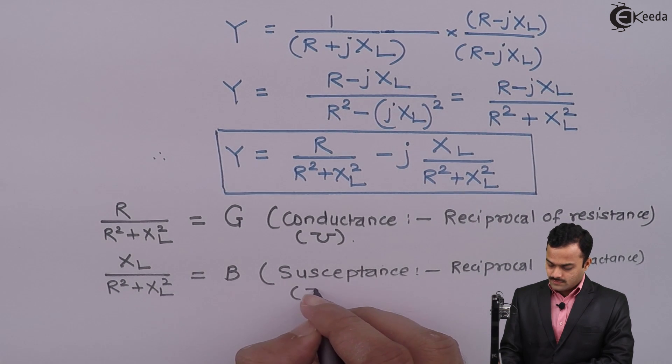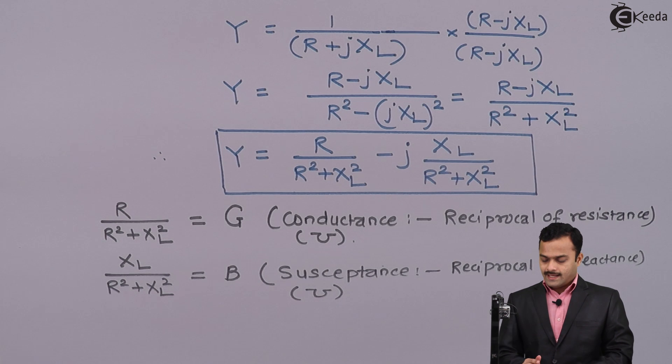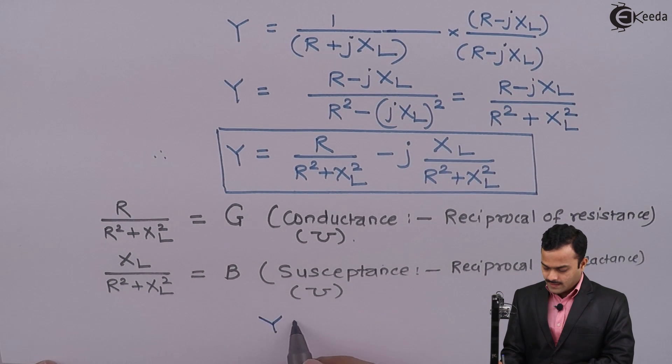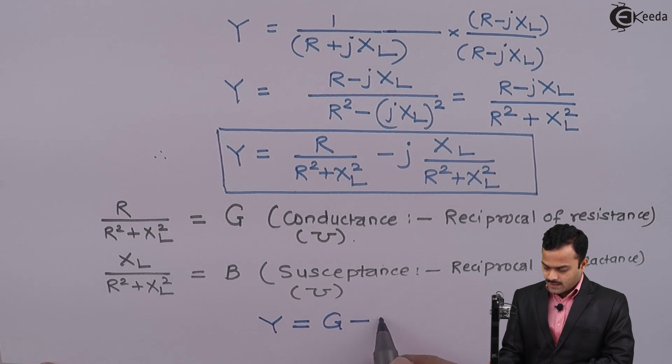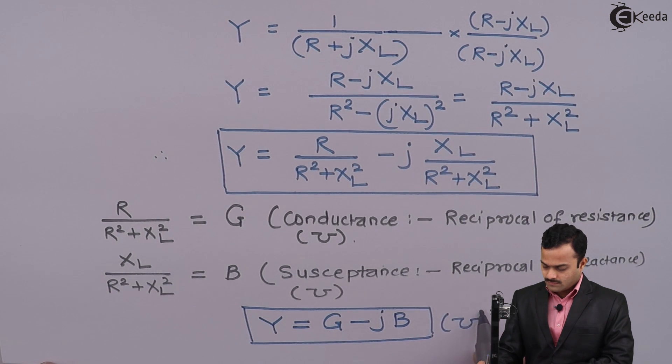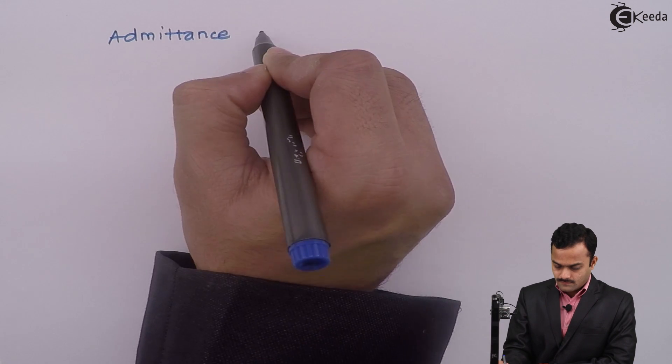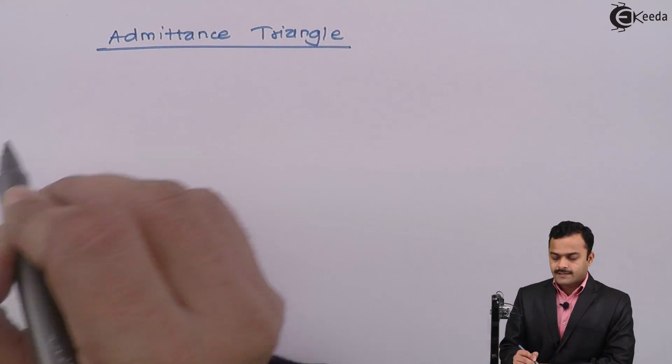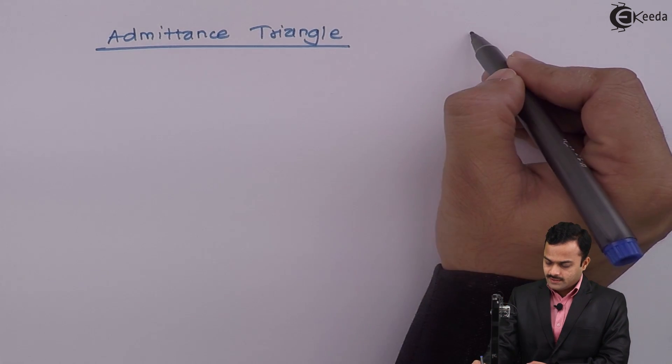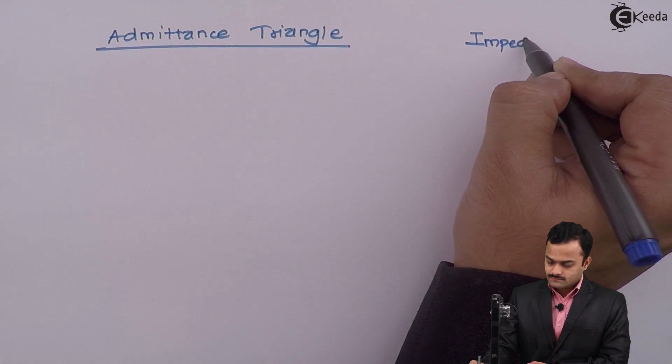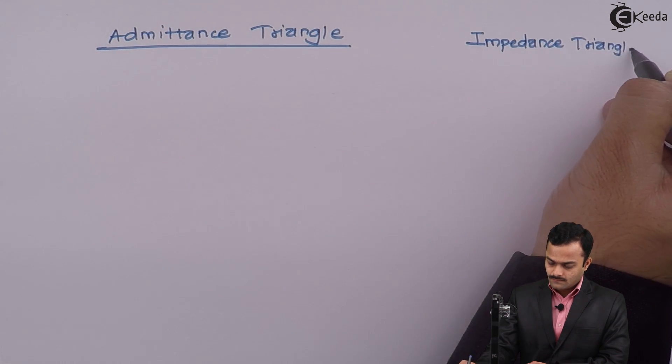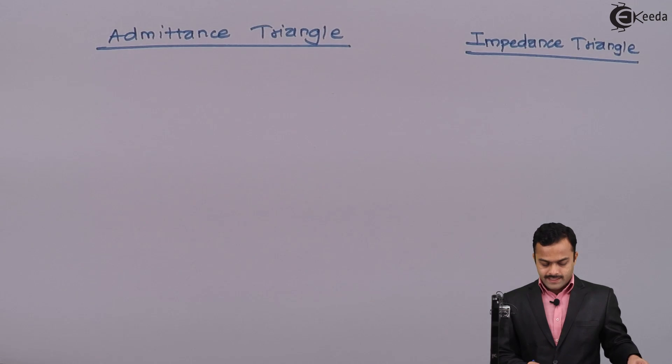The unit is once again mho. So ultimately I can write Y as G - jB, unit is mho. Now let's represent this with the help of a triangle. First I will draw the admittance triangle and then relate this admittance triangle with the already done impedance triangle.